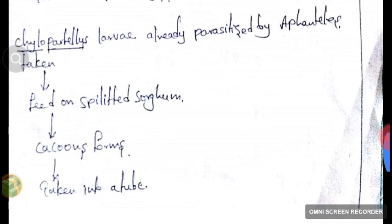Let's see the mass multiplication procedure. Chylopateles is a larva which is already parasitized by Apantheles flavipes. We will take that larva and place it on slitted sorghum so that we can feed it with sorghum.